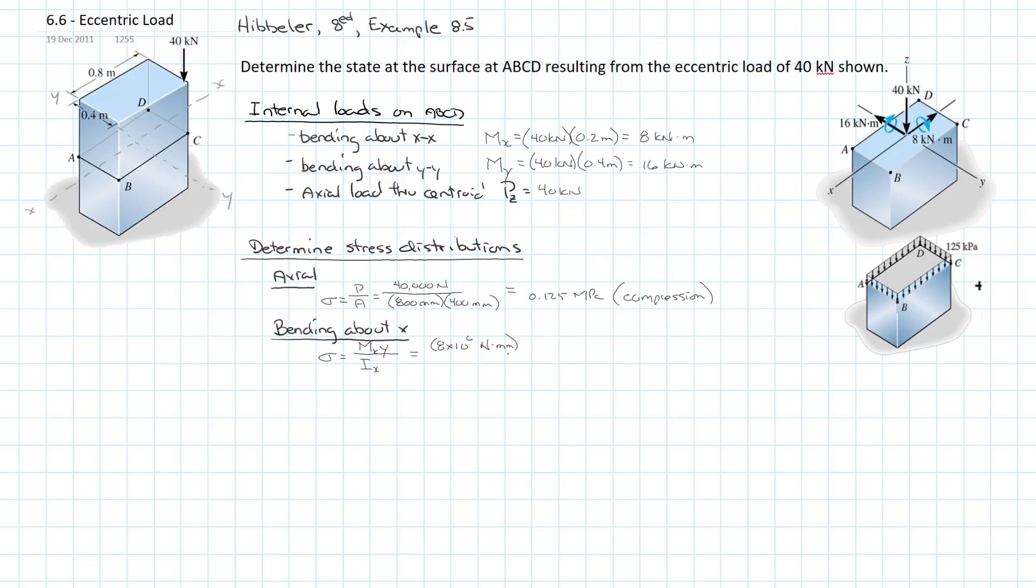And that's divided by our moment of inertia. So for a rectangle, it's BH cubed over 12. And so our B in this case is a width of 800 millimeters. Our height is 400 millimeters, because remember, it's bending about the XX axis. So that tells you which one's your width and which one's your height. And that's cubed, BH cubed, all over 12. And so that gets us a value of 0.375 megapascals.